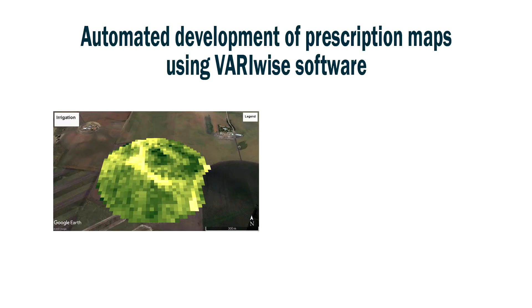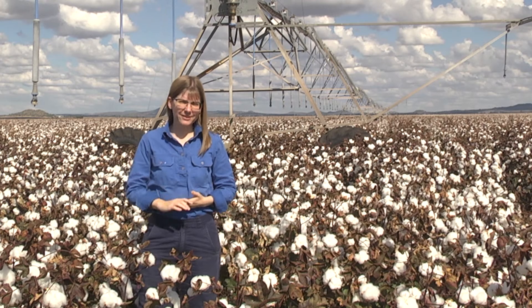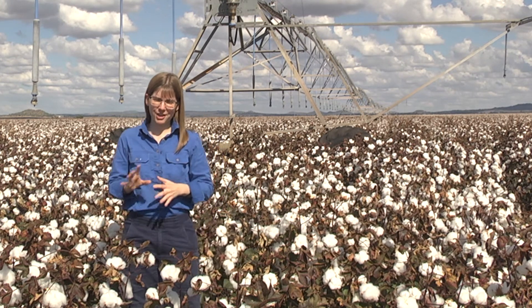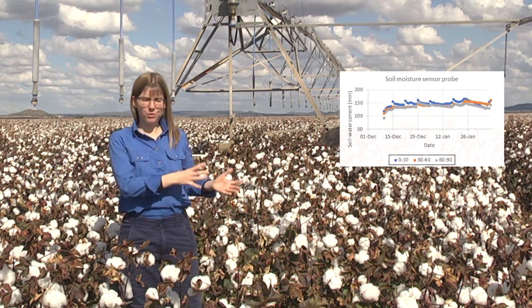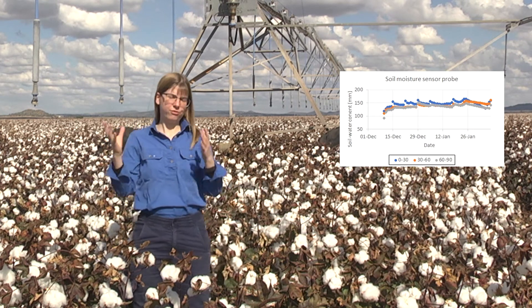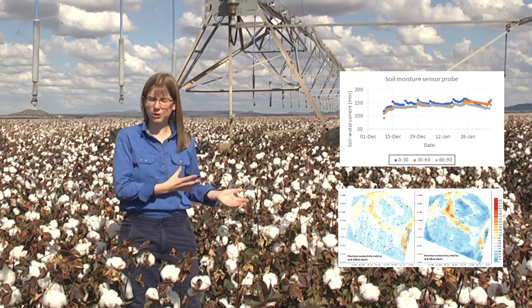We had developed software that automatically generates the prescription maps that are loaded into the machine panel and controls the variable rate hardware. Typically these irrigation prescription maps are generated only from soil moisture sensing, a single satellite imagery, or historical soil maps.